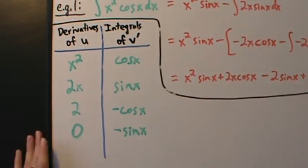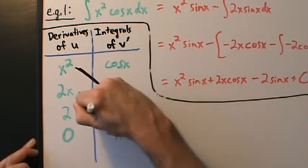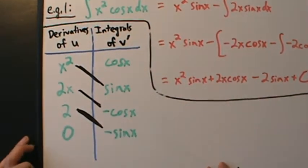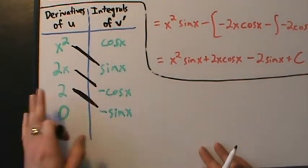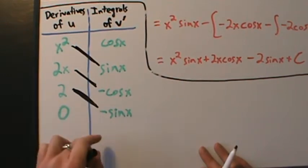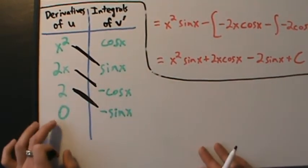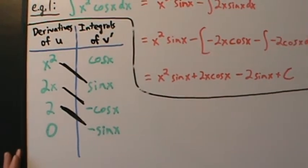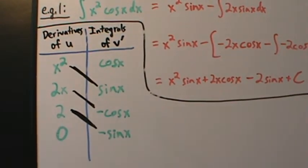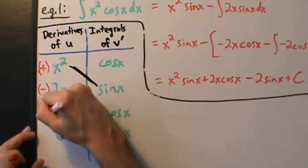Now we have to pair these guys up diagonally. These pairs go together: x squared with sine of x, 2x with negative cosine of x, and 2 with negative sine of x. If we kept going, the 0 would multiply by something, but 0 times anything is 0, so that's why we stop. We also have to be careful of alternating signs — we always start with a positive sign, then minus, then plus.